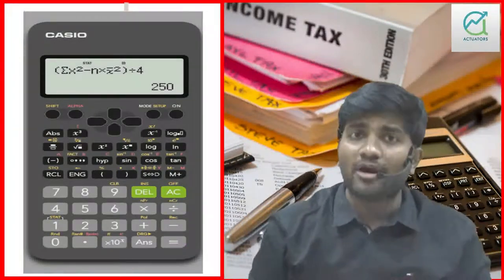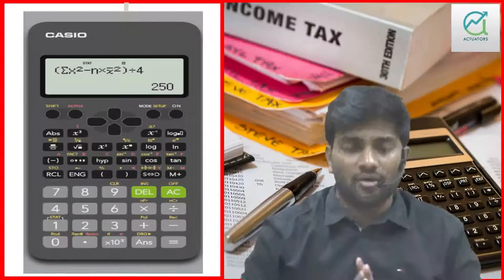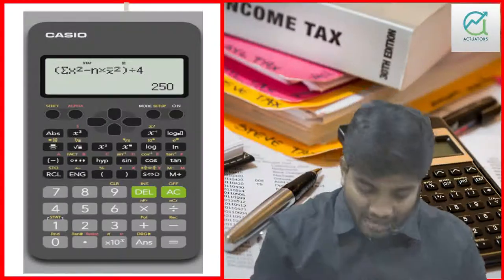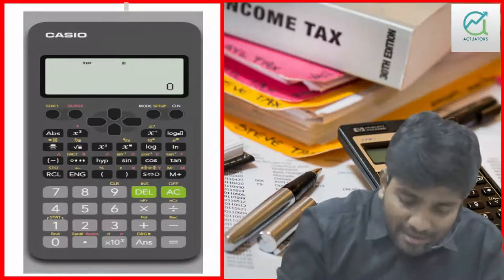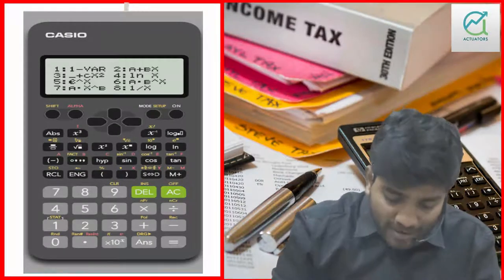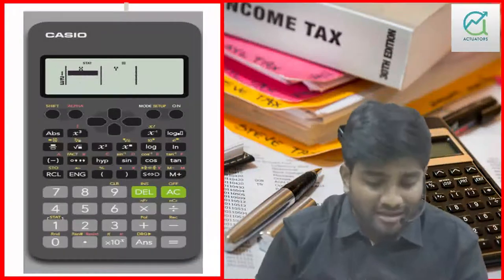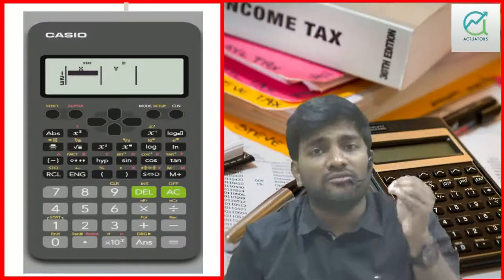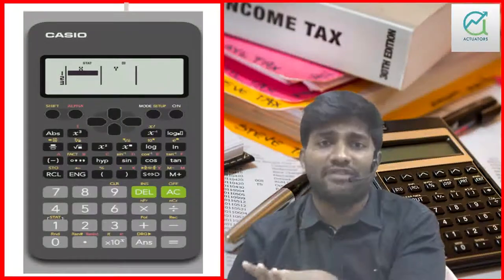Now we will do two variables. I went to mode 2 and selected the two-variable stat mode, which asks for X and Y. My X values are 1, 2, 3, 4, 5 and my Y values are 10, 20, 30, 40, 50 — and I also take them in reverse order: 50, 40, 30, 20, 10.